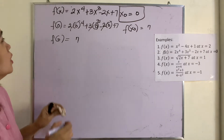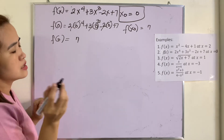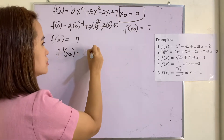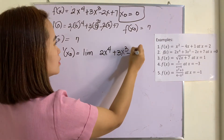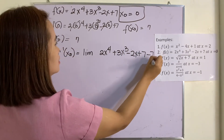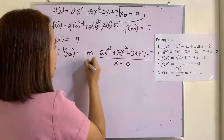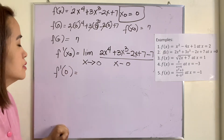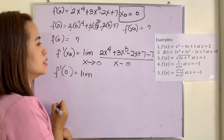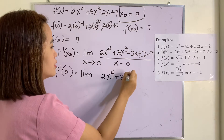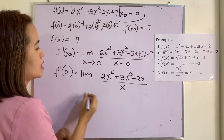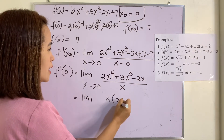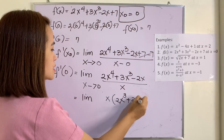We will be using the formula again for the derivative or for the slope of the tangent line — they are the same. So we have F prime of x₀ equal to the limit of 2x⁴ plus 3x³ minus 2x plus 7 minus 7, over x minus 0 as x approaches 0. The 7's cancel, giving the limit of 2x⁴ plus 3x³ minus 2x over x. We can factor out x, leaving 2x³ plus 3x² minus 2.